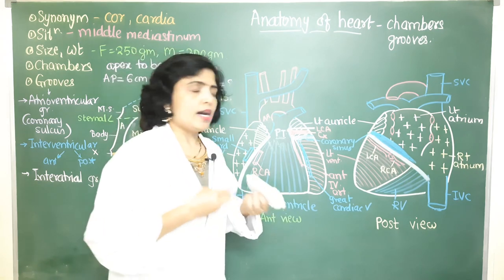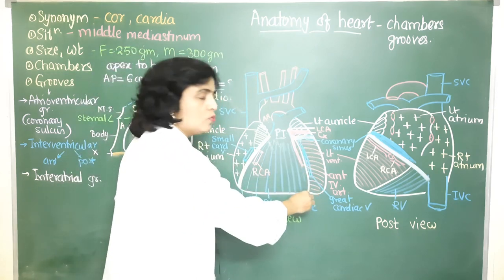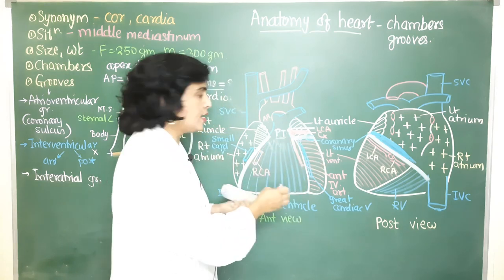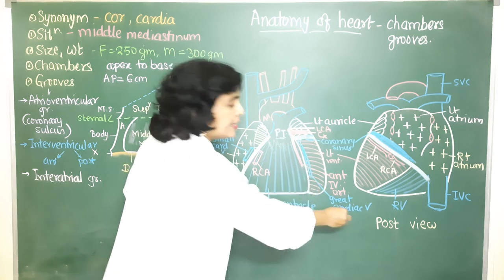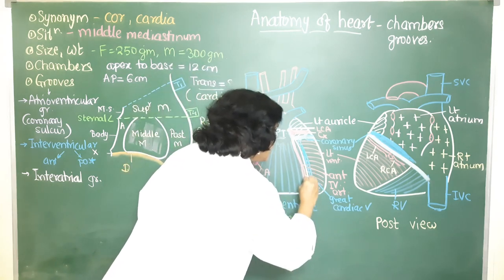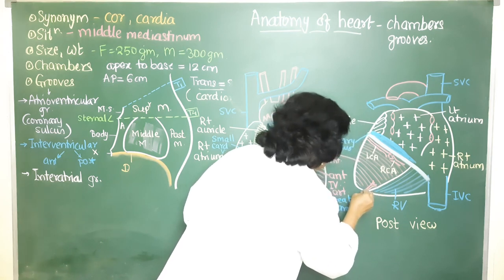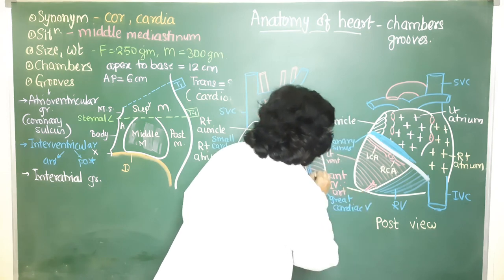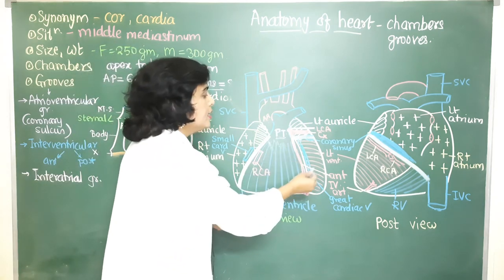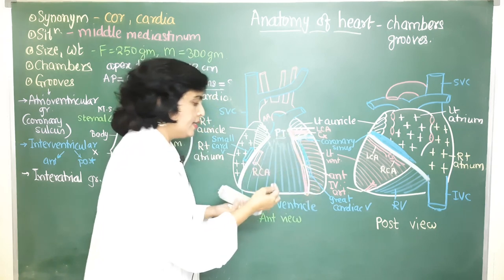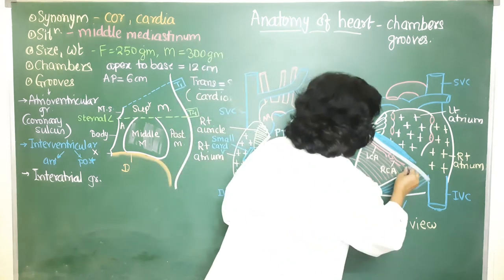The anterior interventricular groove is situated on the sternocostal or anterior surface of the heart. It runs downwards almost parallel to the left border of the heart and lodges the anterior interventricular artery — a branch of the left coronary artery — and the great cardiac vein. The anterior interventricular artery winds around the inferior border of the heart to enter the posterior interventricular groove.